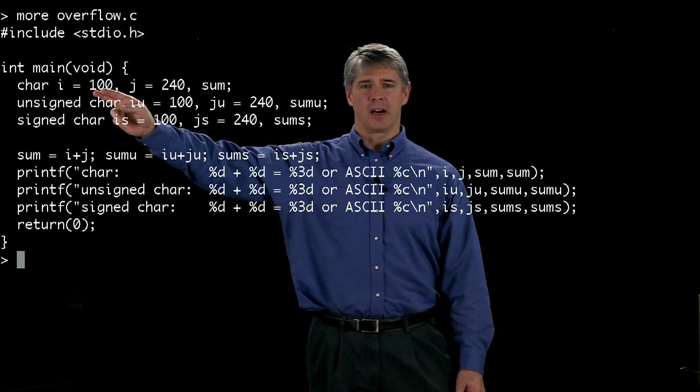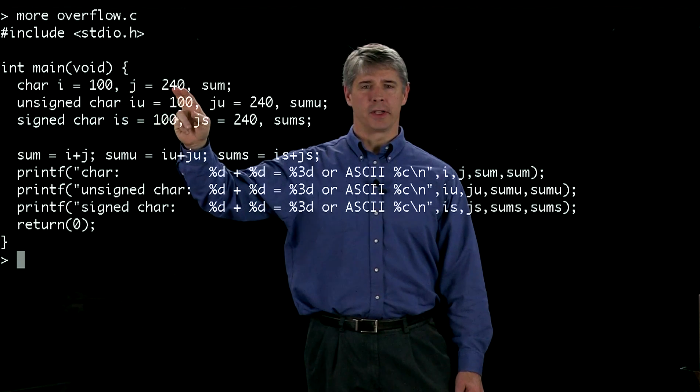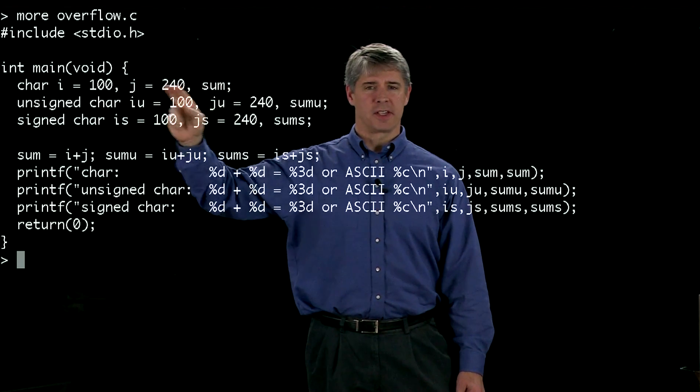We define three chars here: i is equal to 100, j is equal to 240, and sum is going to be the sum of those two.